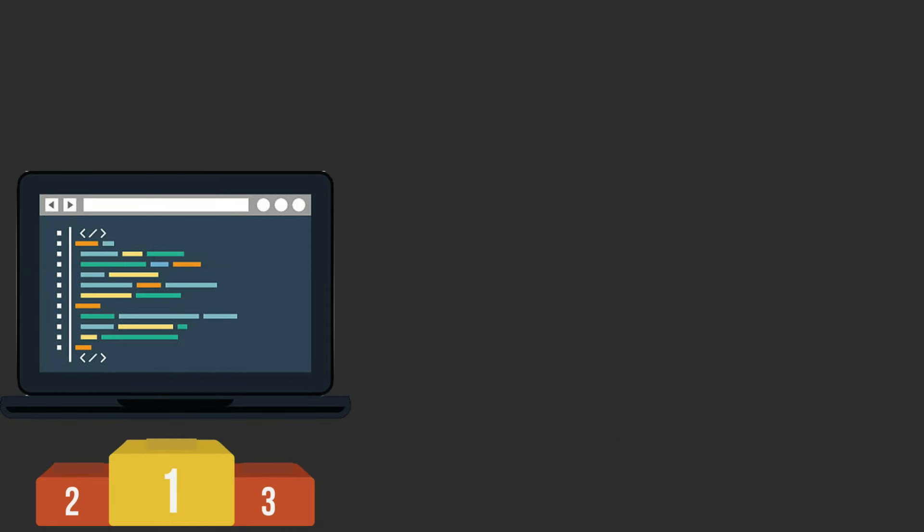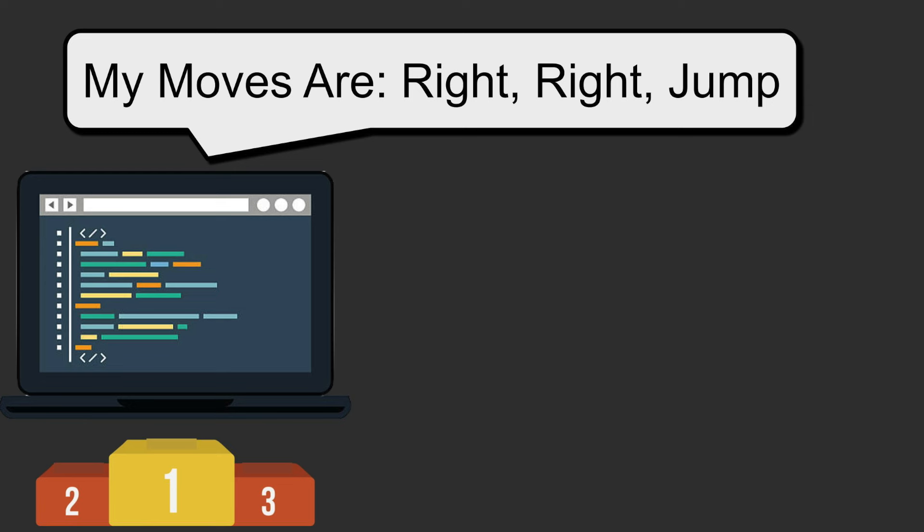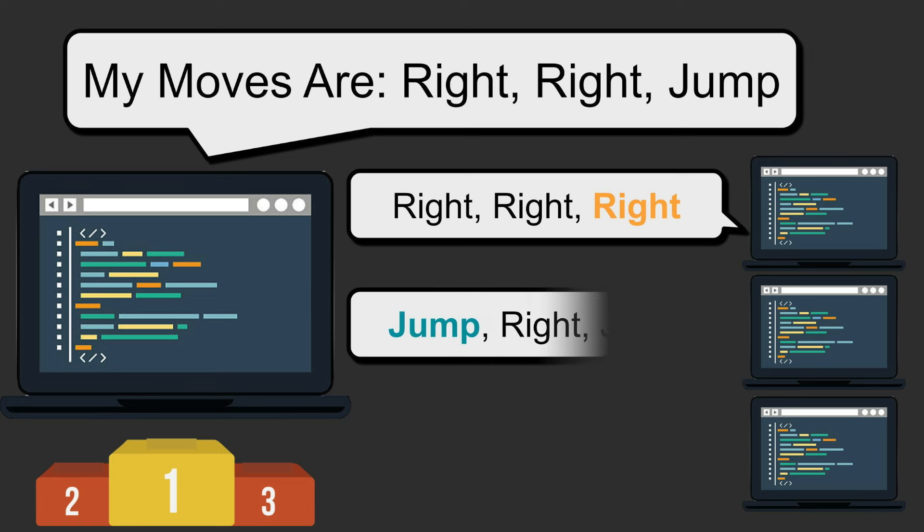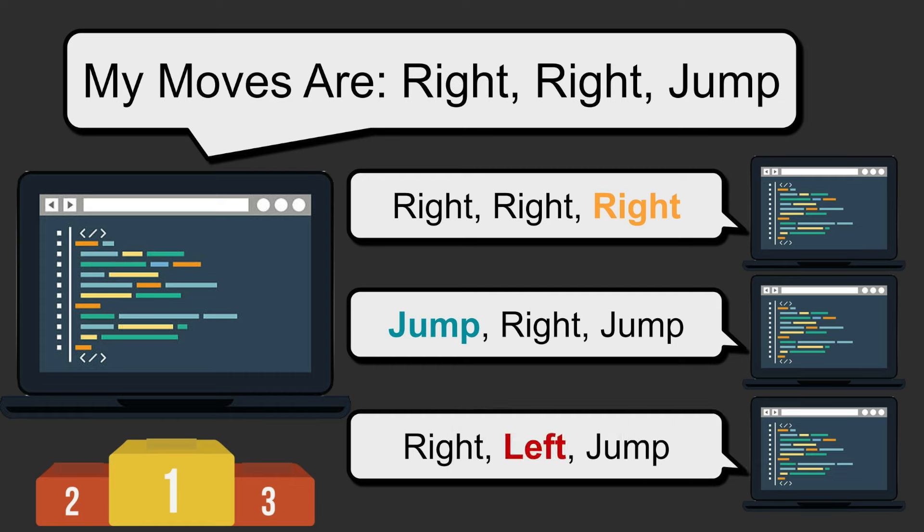While the model AI might say, go right two turns and then jump, the offsprings may say something like, go right for three turns, or jump, then go right, then jump, or go right, then go left, then jump.